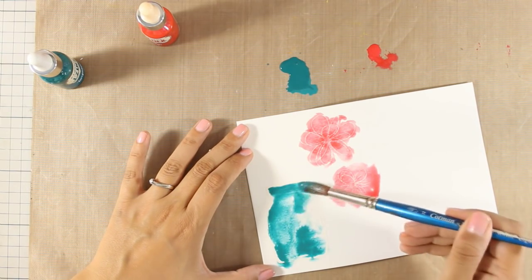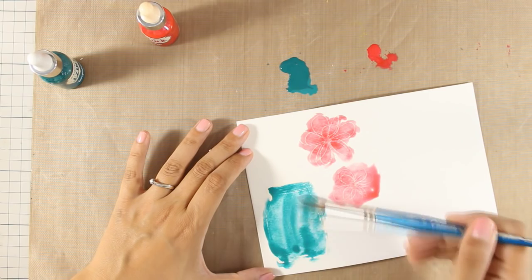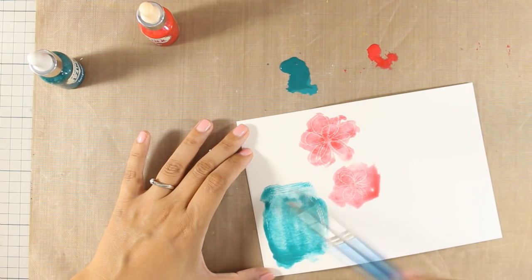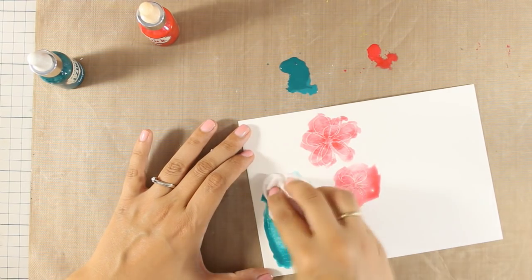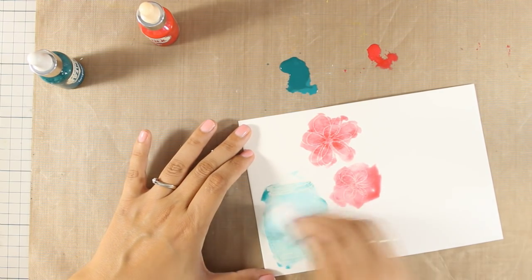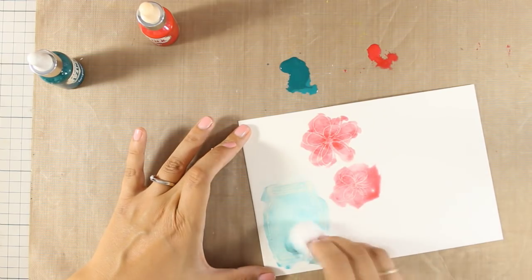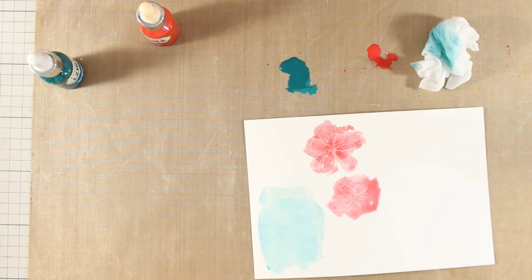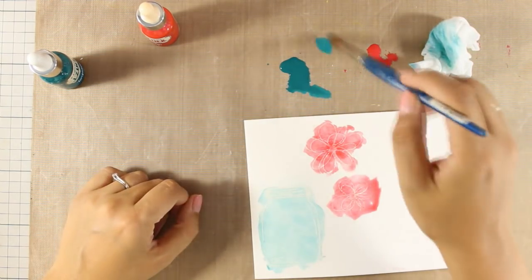I have applied the color, the ink on the jar and then I am going to use my baby wipe to dab off the excess. So I get a lighter version of this color while at the same time I get the watercolor effect. Now I am going to add a little bit more color at the bottom to do some shading for my jar.